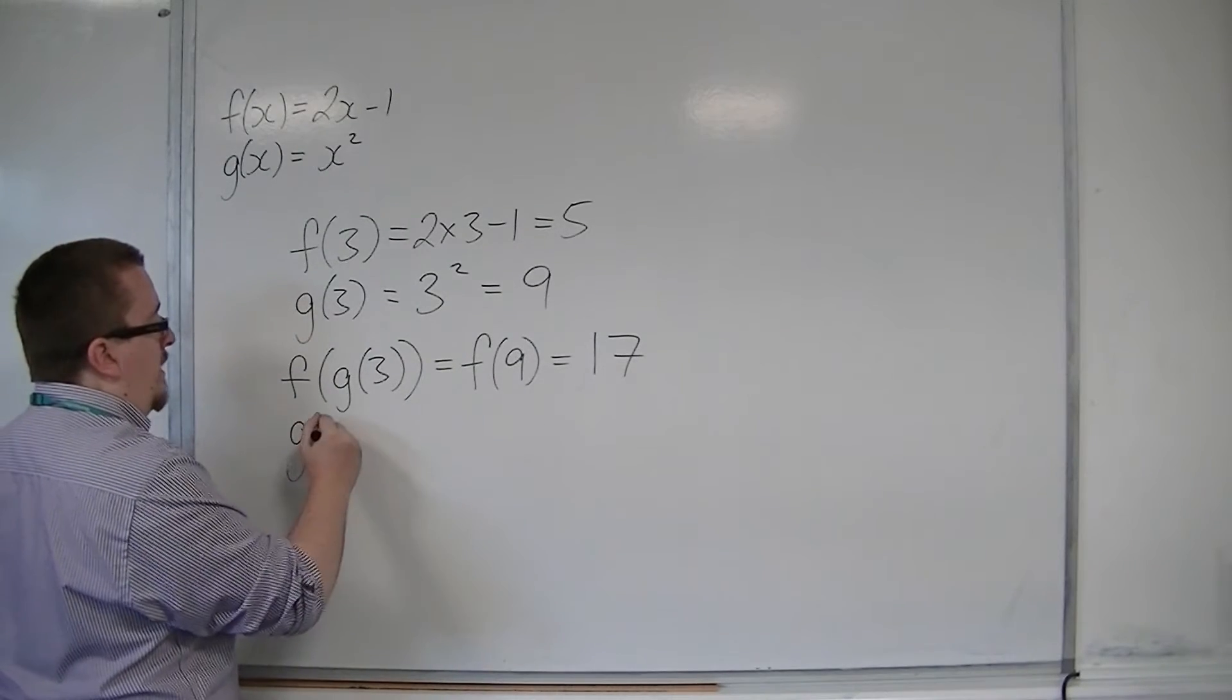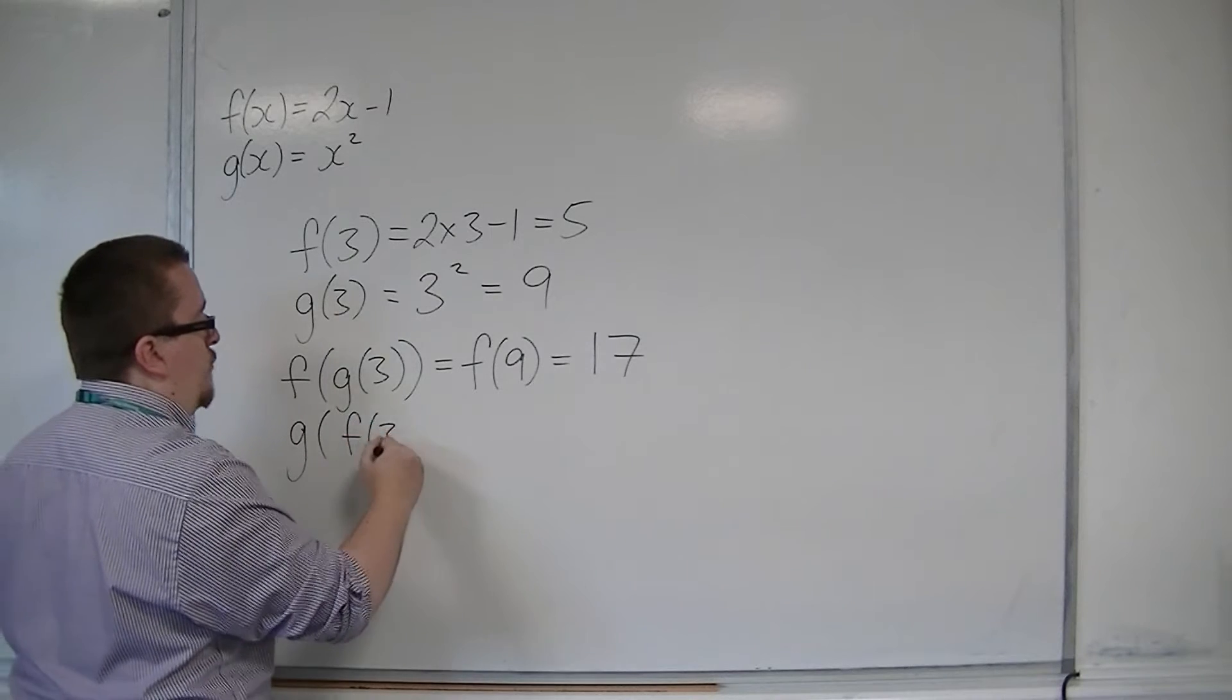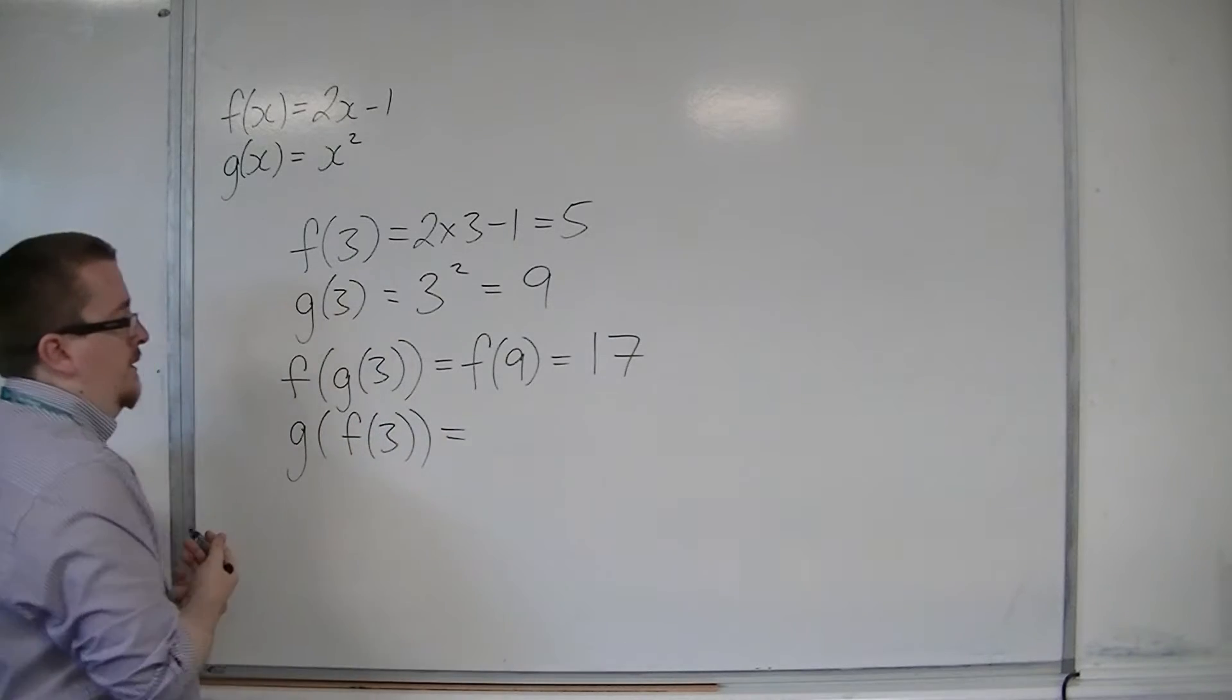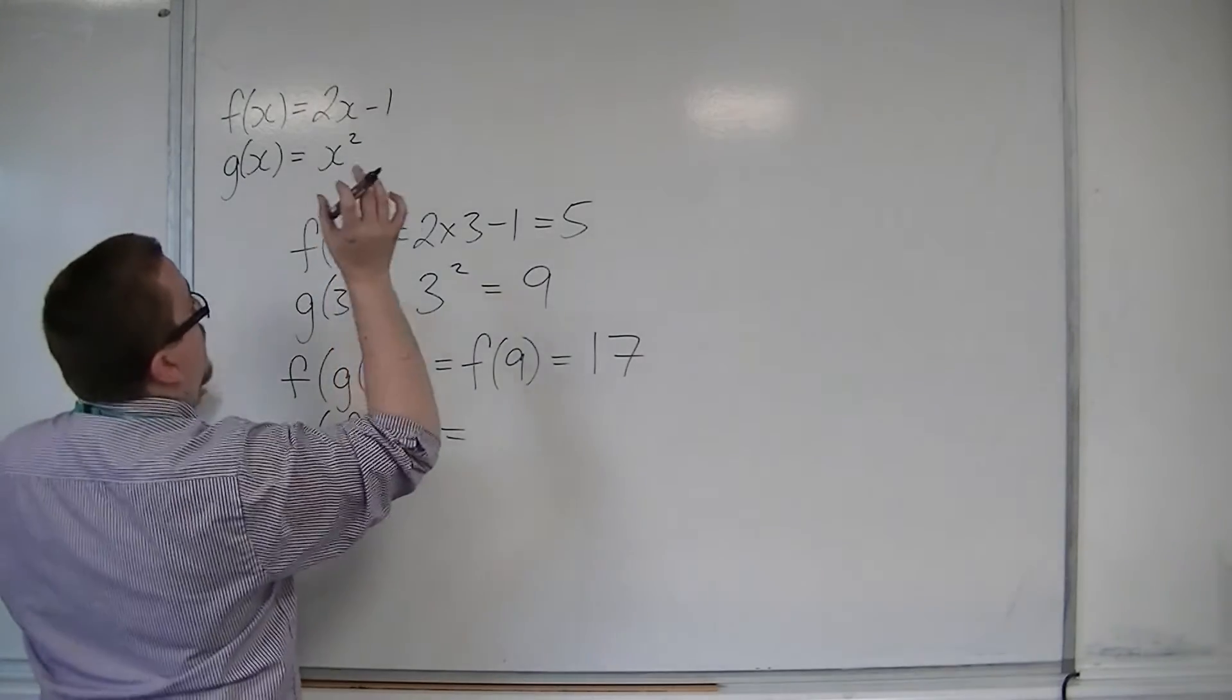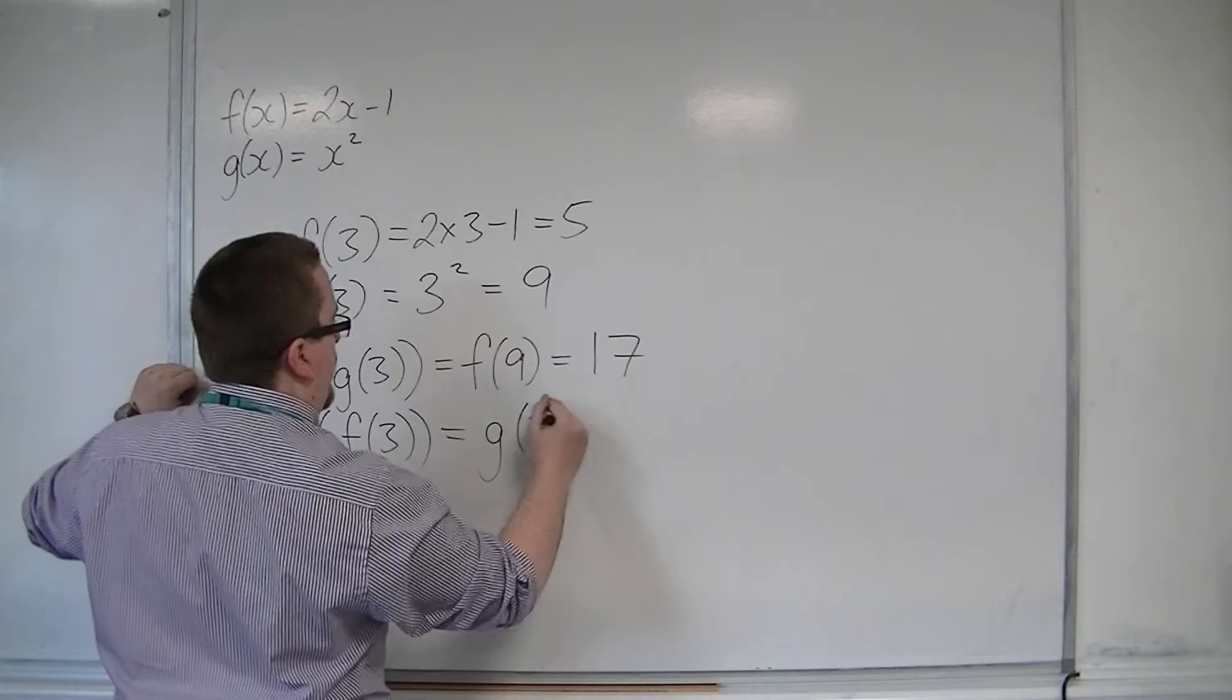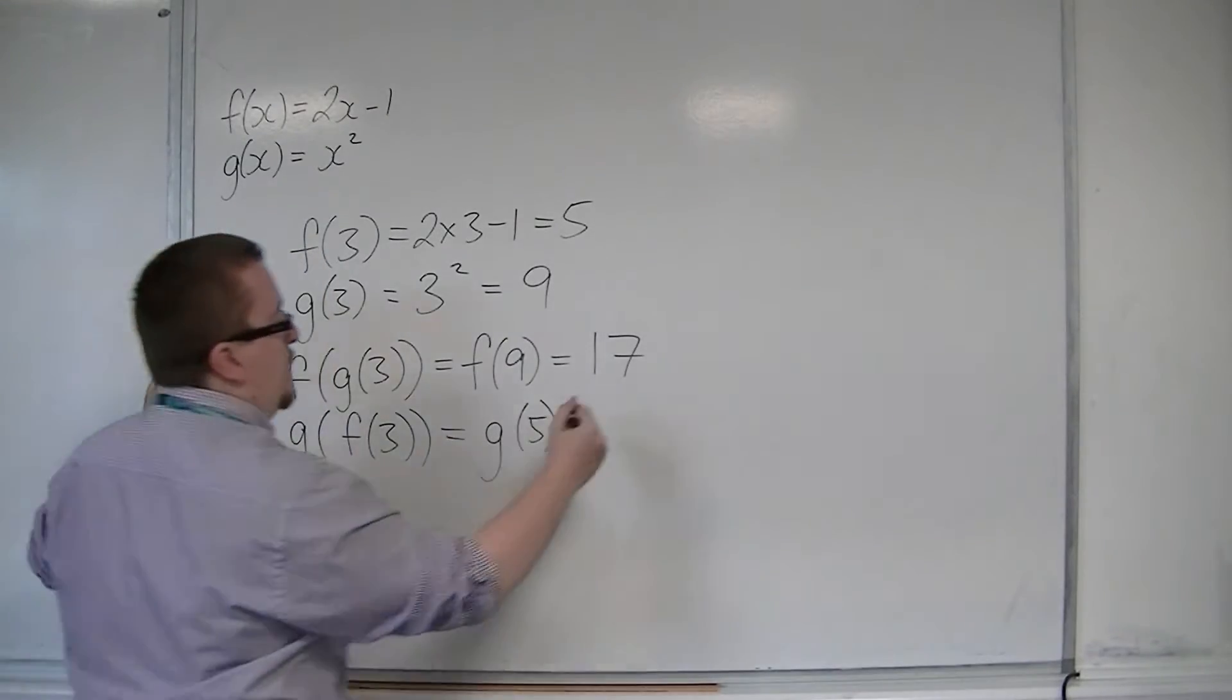So likewise, I could work out what g of f of 3 is. So g of f of 3, which was 5, goes into g, so that's 25.